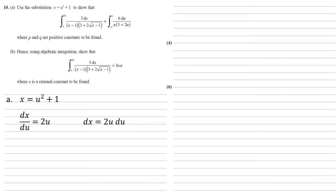Now we need to change the bounds as well. So we've got 5 and 10. When x is equal to 5, we get that 5 is equal to u squared plus 1, so u squared must be 4, hence u is 2. When x is 10, we get that 10 is equal to u squared plus 1, hence u squared must be equal to 9, and u is equal to 3.